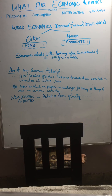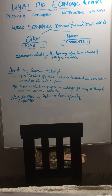Let's take examples. For example, a farmer, a worker, a cobbler, a shopkeeper, an industrialist, a lawyer, a CA — what are they doing? They are performing activities to earn their living. So that is known as an economic activity.